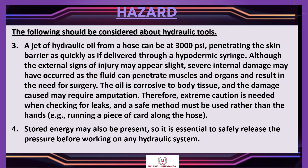Number 3: a jet of hydraulic oil from a hose can be at 3,000 PSI, penetrating the skin barrier as quickly as if delivered through a hypodermic syringe. Although the external signs of injury may appear slight, severe internal damage may have occurred as the fluid can penetrate muscles and organs and result in the need for surgery. The oil is corrosive to body tissue, and the damage caused may require amputation. Therefore, extreme caution is needed when checking for leaks, and a safe method must be used rather than the hands, like running a piece of card along the hose.